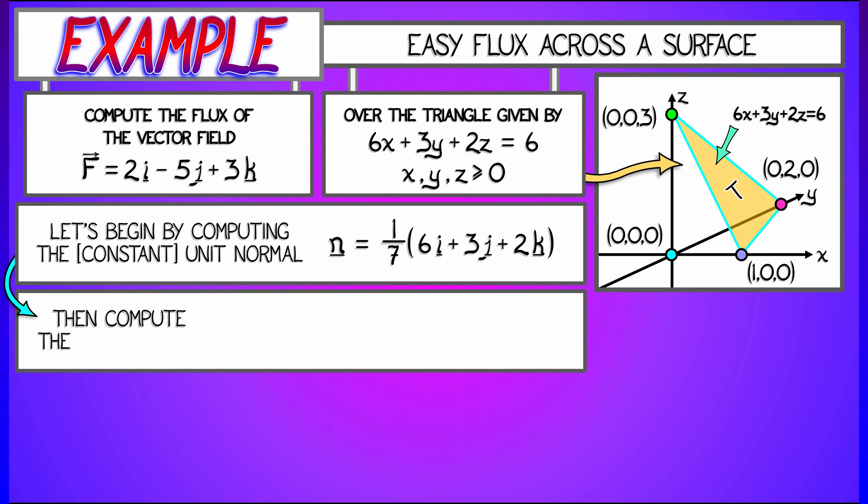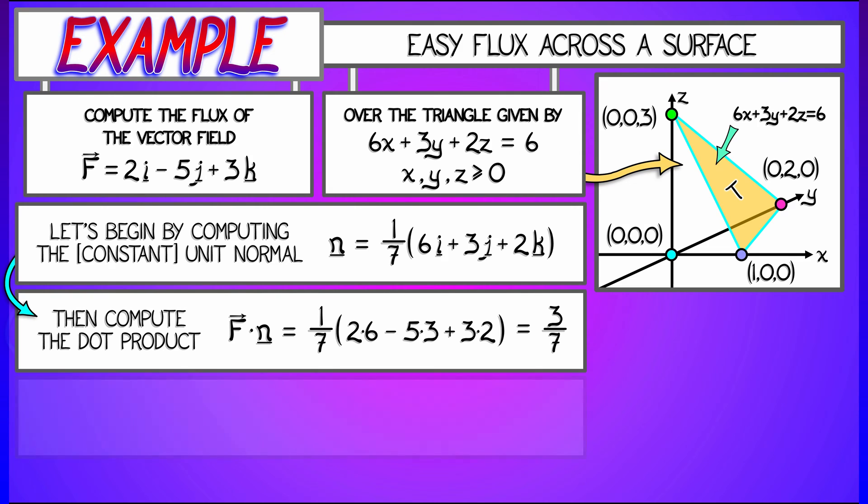Now what we do is compute everywhere on that surface the dot product of the vector field with the unit normal. F dot n is 2 times 6 minus 5 times 3 plus 3 times 2 all divided by 7. That's 3/7ths. It's constant. We have a constant infinitesimal flux because everything is so nice.